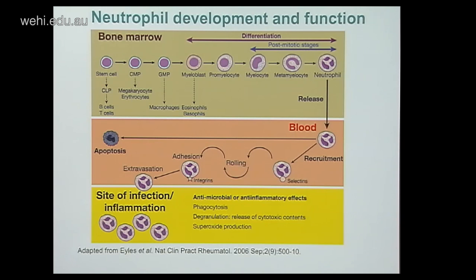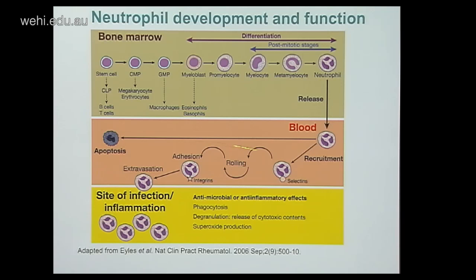Neutrophils differentiate in the bone marrow. Under normal conditions, mature neutrophils exit the bone marrow into the blood where, unless there is an inflammatory response or infection, they undergo constitutive apoptosis. During infection or sterile inflammation, neutrophil production increases and both mature and immature neutrophils are released into the blood. They are attracted to the site of infection — selectins bind inflamed endothelial cells causing rolling, then integrins are upregulated for stronger adhesion. Extravasation occurs and they can phagocytose, degranulate, and produce reactive oxygen species.